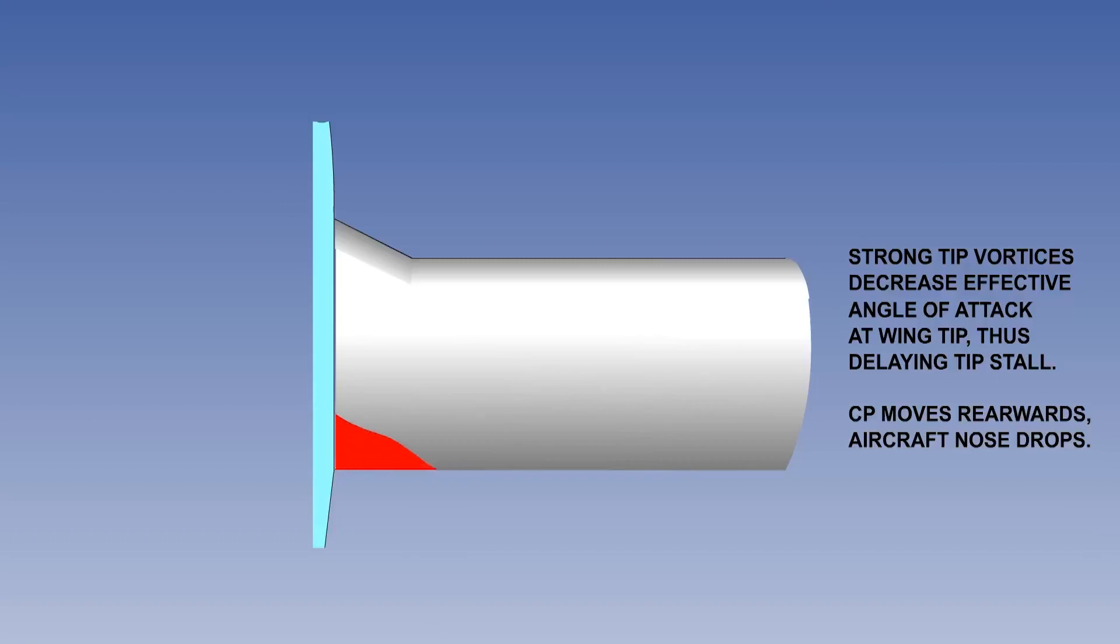As the aircraft stalls, the centre of pressure moves aft, causing the nose to drop, thus reducing the angle of attack. This gives the aircraft a natural tendency towards a recovery from the stall.